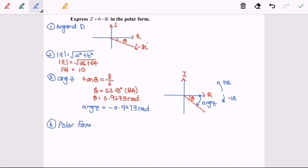Okay. So finally, the polar form z will be equal to 10 times cosine of negative 0.9273 plus i times sine of negative 0.9273. So here we are. And thanks for watching.